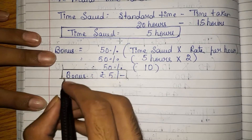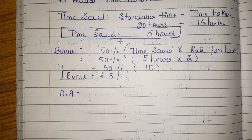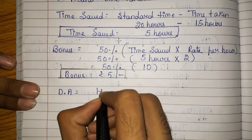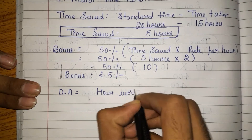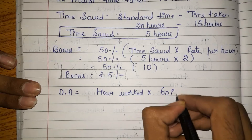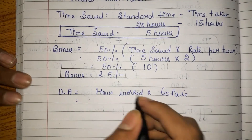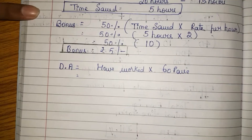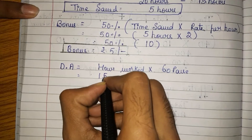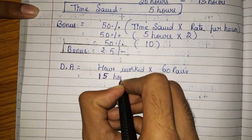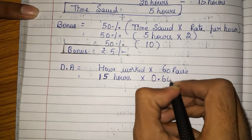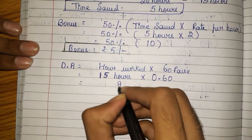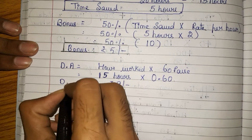Now let us calculate the dearness allowance. What they have told is DA will be given at 60 paisa per hour worked. He has worked for 15 hours, so 15 into 0.60 gives rupees 9. So dearness allowance is rupees 9.